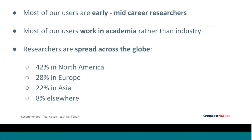Who are the users? From the survey, most users are early to mid-career researchers, rather than very experienced researchers who already know what they're looking for and can make good judgments over what to read. We've noticed that most of our users work in academia rather than industry, and researchers are spread across the globe — 42% of our users are based in North America, 28% in Europe, 22% in Asia, and 8% elsewhere.